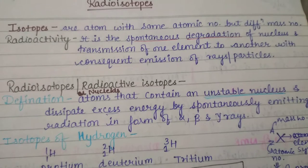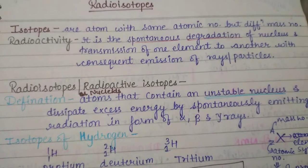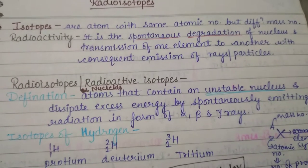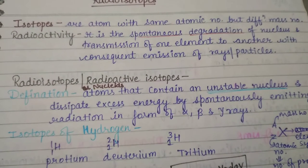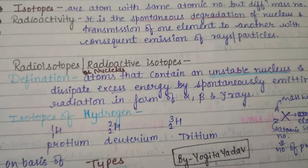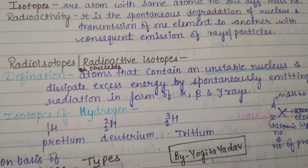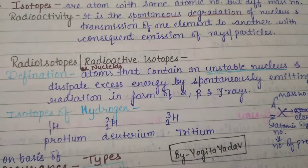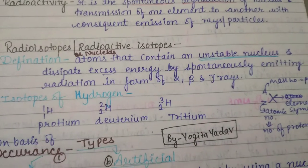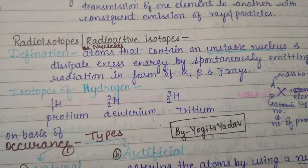Radioactivity is a spontaneous degradation of a nucleus and transmission of one element to another with consequent emission of rays and particles. Radioisotopes are atoms that contain an unstable nucleus and dissipate excess energy by spontaneously emitting radiation in the form of alpha, beta, and gamma rays.